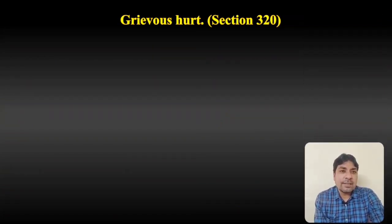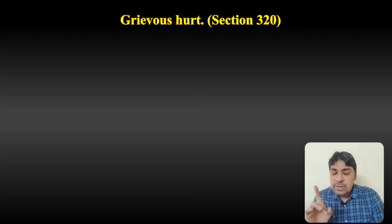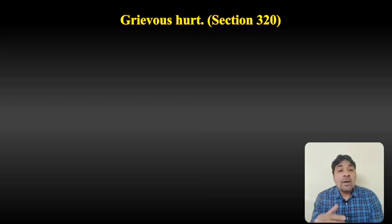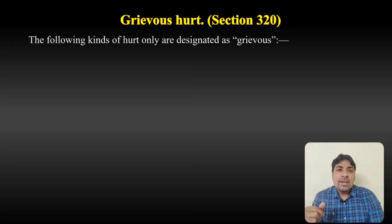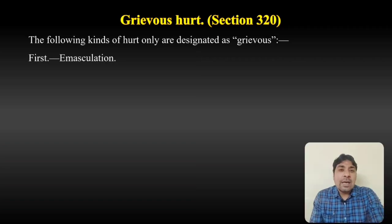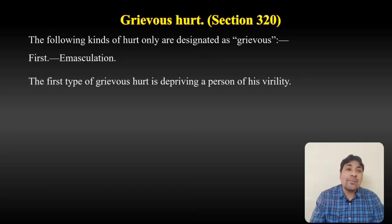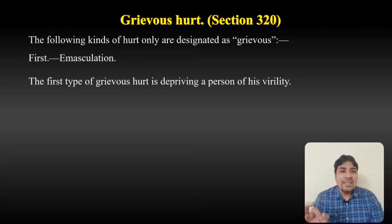Now section 320 — Grievous Hurt. In section 319 we saw that hurt means causing bodily pain, disease or infirmity to a person. Now, grievous hurt under section 320: the following kinds of hurt only are designated as grievous. The first one is emasculation — depriving a person of his virility.